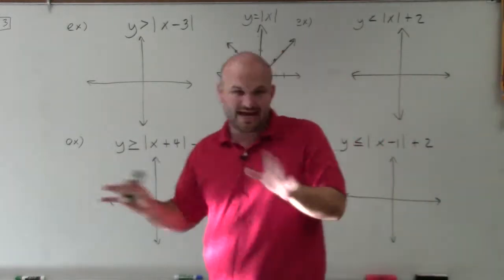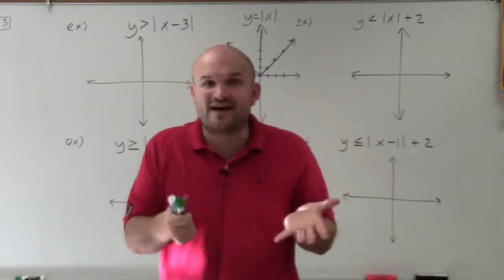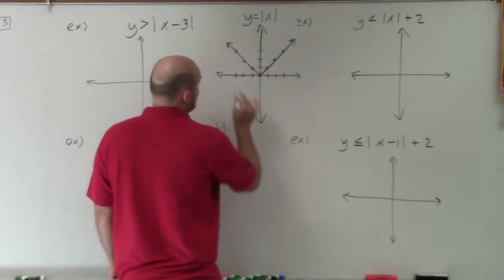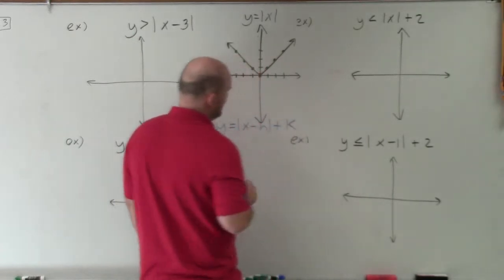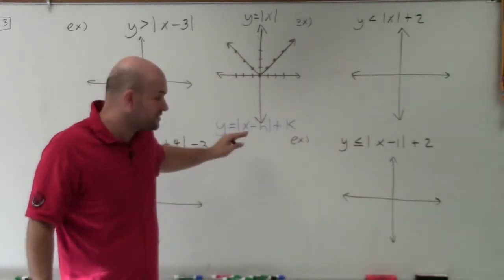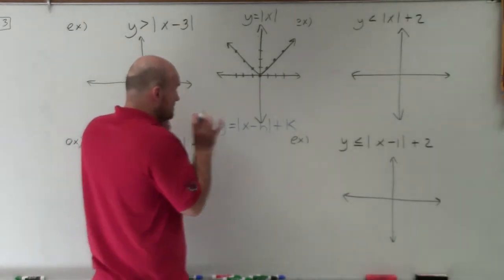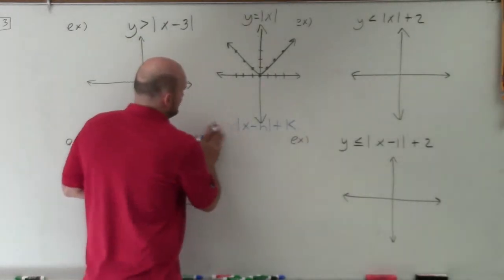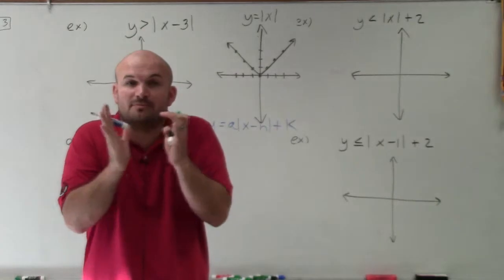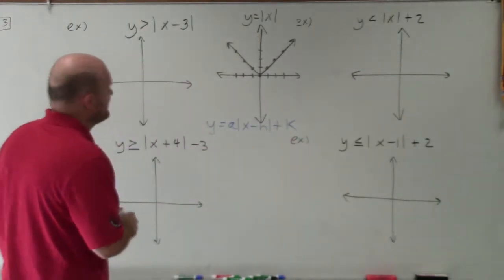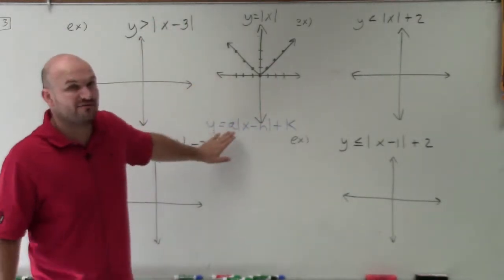I've added a whole bunch of transformations — adding and subtracting numbers to our parent graph — so we need to remember what that does to the graph. These don't have an a, so we're going to y equals absolute value of x minus h, plus k. You need to know the transformation equation, where h shifts your graph left or right and k shifts your graph up or down. Actually, let's write in a, because a is going to be a dilation — it will compress or stretch the graph. In all these problems, a is 1, so a is not really going to be affecting our graph.